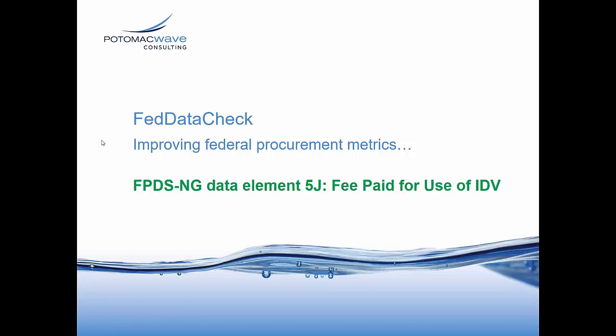I think we're going to get started. My name is Kathleen Harford, I'm with Potomac Wave Consulting. This is a webinar — our Fed Data Check Webinars — part of a weekly series that we do. We host every Thursday at 2 p.m. Eastern, covering topics ranging from all over the place but focusing on improving federal procurement metrics. This week's topic is FPDS NG Data Element 5J, the fee paid for use of IDV, which is a surprisingly tricky data element to complete in FPDS NG.